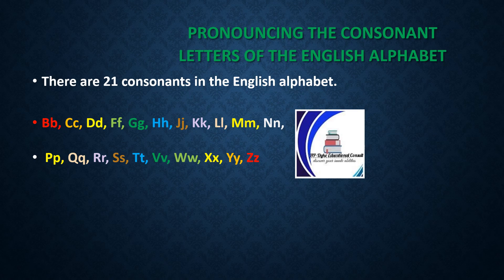There are 21 consonants in the English alphabet: B, C, D, F, G, H. The letter is pronounced H and not 'Haitch'. It is H, not 'Haitch'.